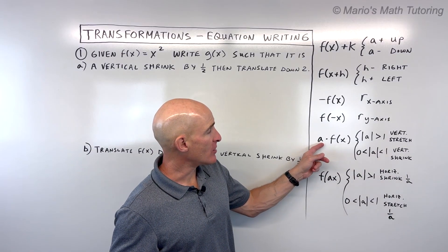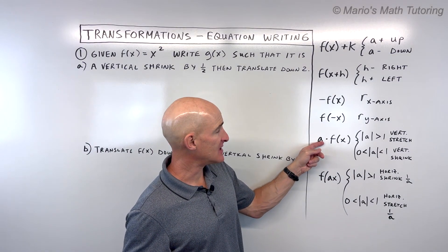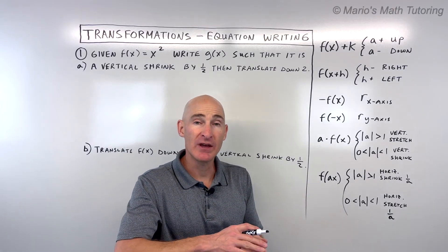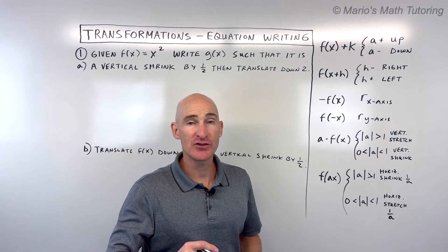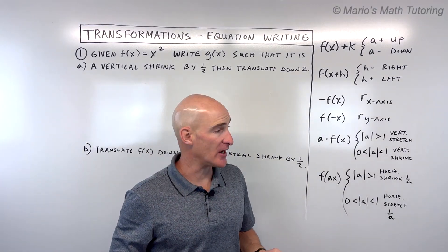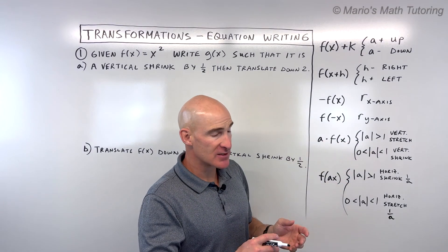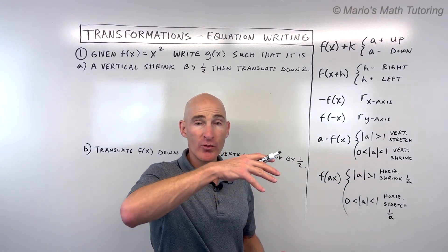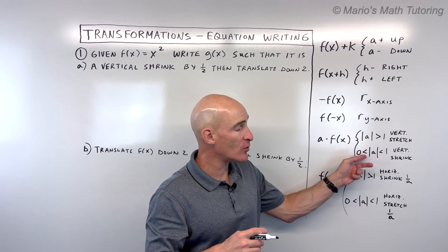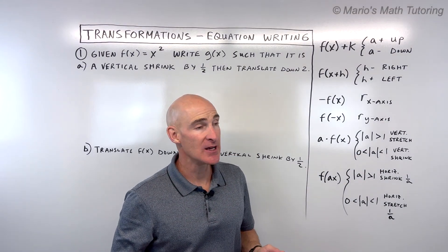If you have this a value multiplied by f of x — say for example if a was two — that would be a vertical stretch by a factor of two. If it was one half, it'd be a vertical shrink. So when you take the absolute value, if it's greater than one we say it's a stretch. If you take the absolute value and it's between zero and one — like a half, a third, a fourth — that's a vertical shrink.